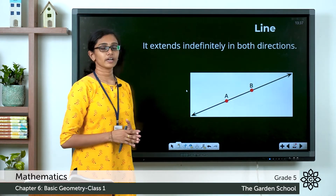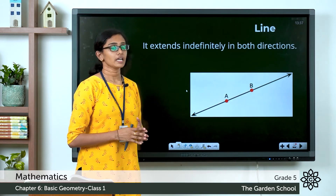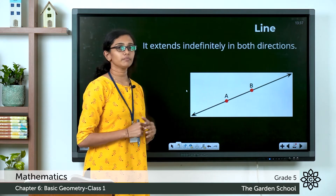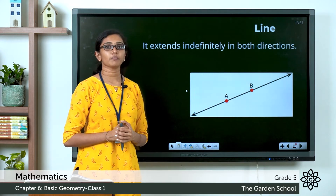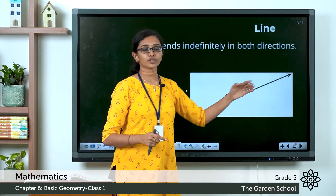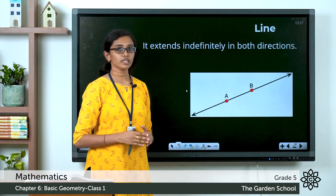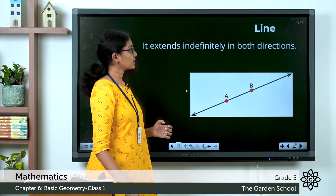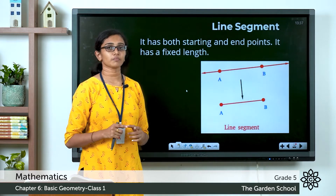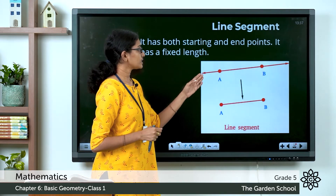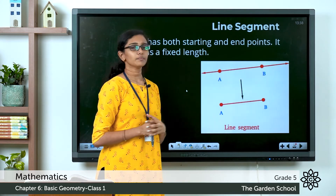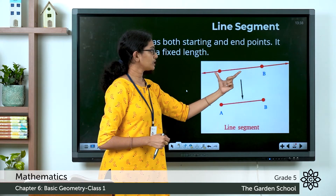What do you mean by a line? A line can be defined as something which extends indefinitely in both directions through some points. You can see a line here with two points marked: A and B. There are infinite points that can be marked on a line because a line never ends — it extends in both directions, shown by arrows on both sides. What is a line segment? A line segment is a part of a line — a piece of a line between two points.